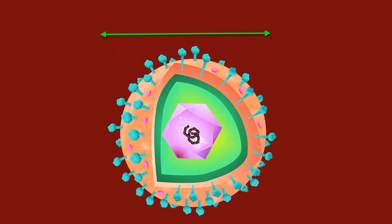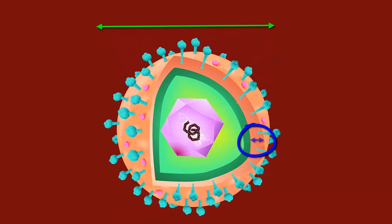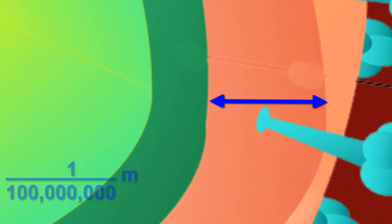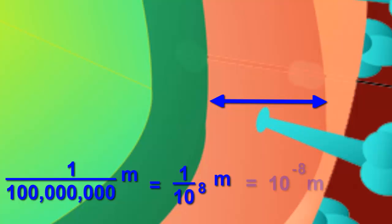Zooming in another step, we can see that the virus wall, called the envelope, is about a tenth of the virus width itself, coming in at a staggeringly small one hundred millionth of a metre. That's ten to the negative eight. The envelope is made out of fats that the virus gets from its host. Yuck!